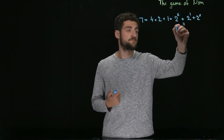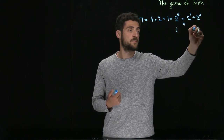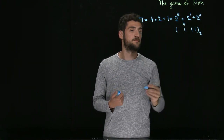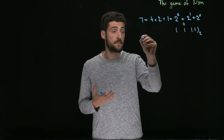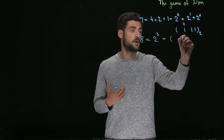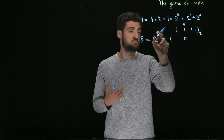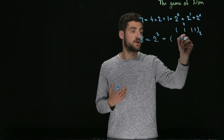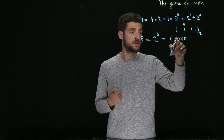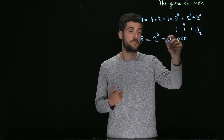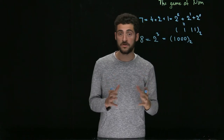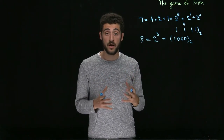We can write seven in binary as one, one, one. And for eight, which is just two to the three, the zero digit is zero, the one digit is zero, the two digit is zero, and finally the third digit is one, giving us one, zero, zero, zero in binary. Any number can be written this way, and the procedure is very simple.